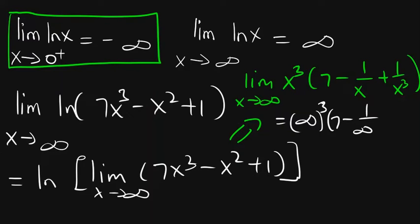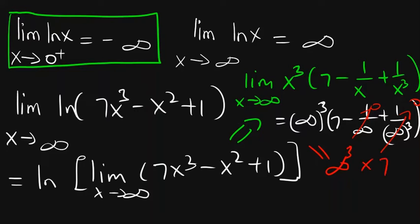Doing direct substitution: infinity³ times (7 minus 1/∞ plus 1/∞³). The terms 1/∞ and 1/∞³ both become zero, so we are left with infinity³ times 7, which gives infinity. So we are taking the natural log of infinity, and from the second fact that gives us infinity. Note that this is positive infinity and not negative infinity, because you can't take the natural log of negative infinity — the infinity value we are putting in is a positive value. Thank you for watching; please like the video and subscribe to the channel.